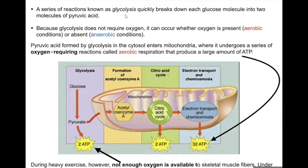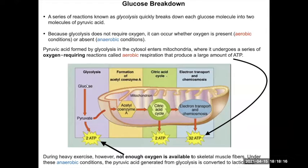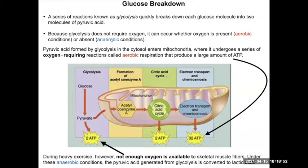So we've got glucose in those two forms and now we want to break it down. We're going to break it down in different steps, starting with glycolysis. Through glycolysis you form pyruvate molecules — a breakdown product of glucose — and from that you get a little bit of energy. In the absence of oxygen, that'll be your source of energy, whereas this second process forms a lot of ATP and requires oxygen.